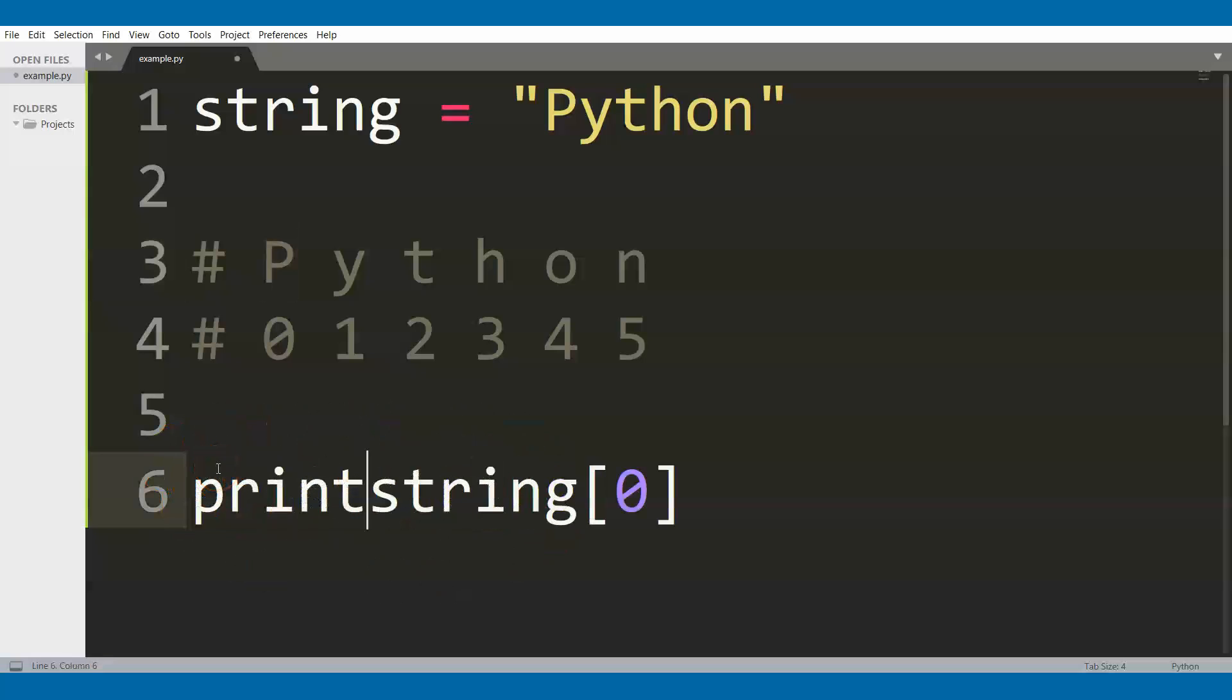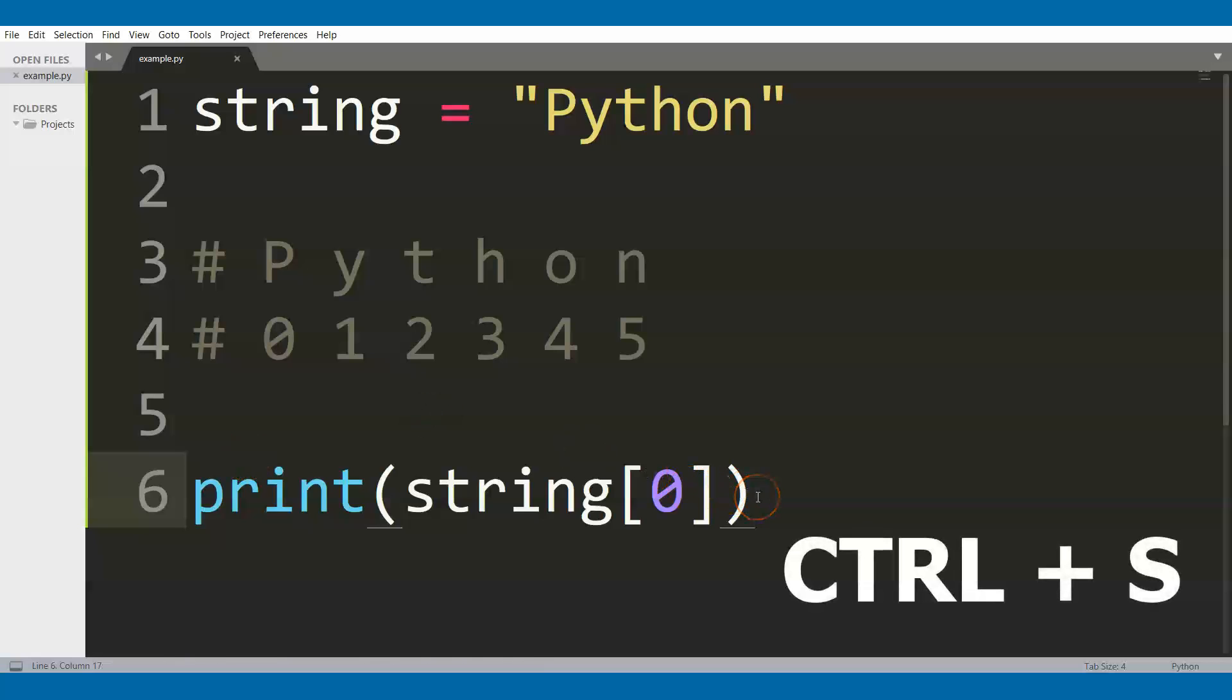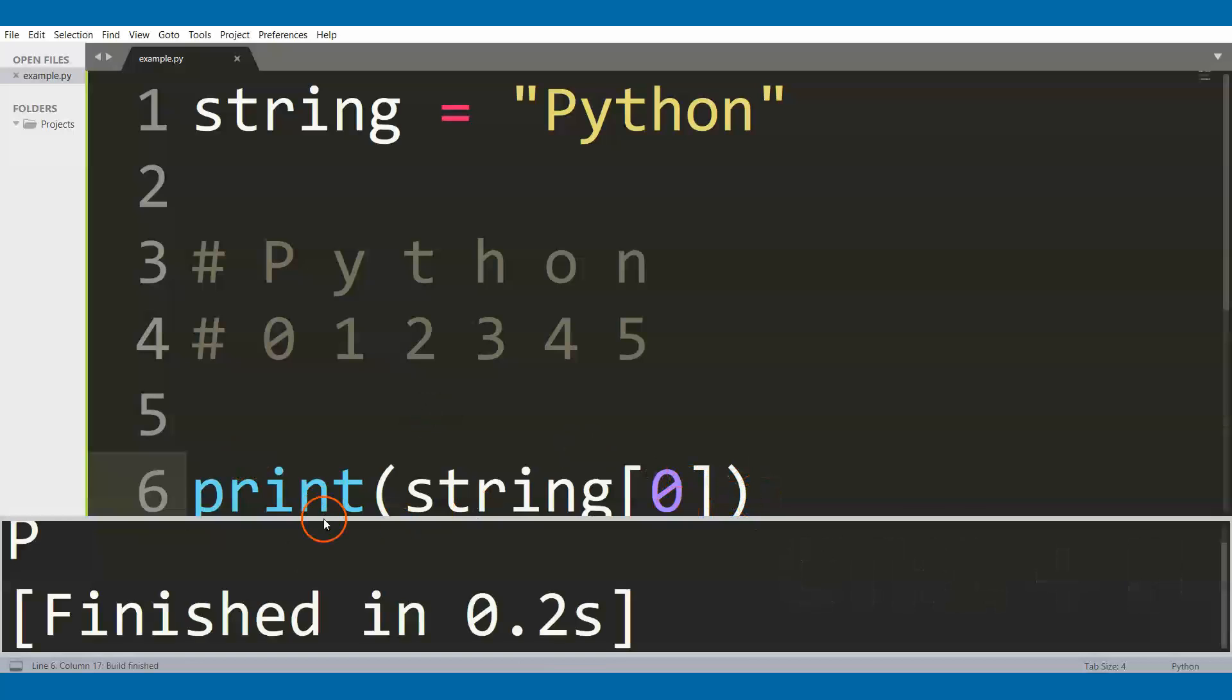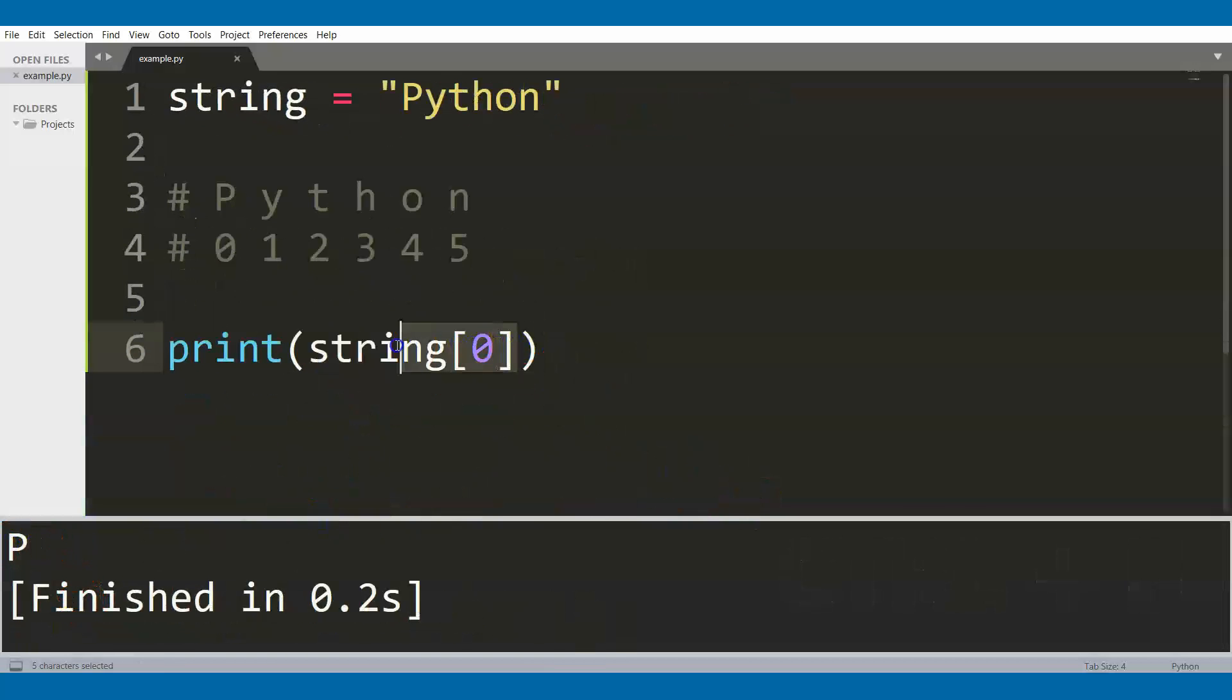Let's see this by printing the value. If we save the file with ctrl S, and then we click ctrl B to run the code, we see this output. This right here evaluated to the letter P.